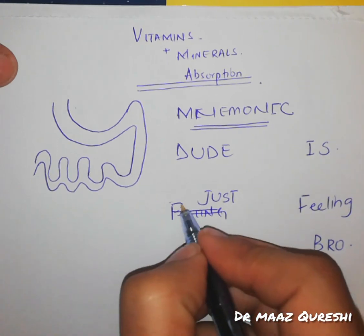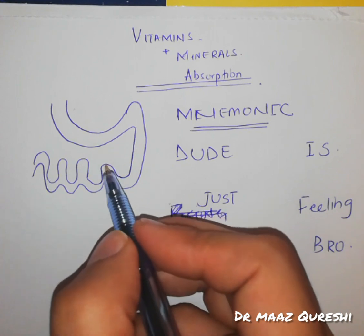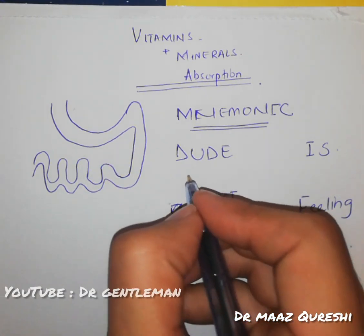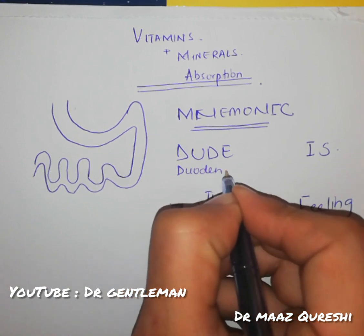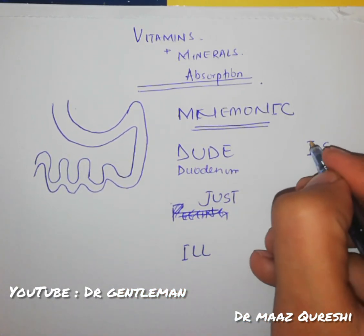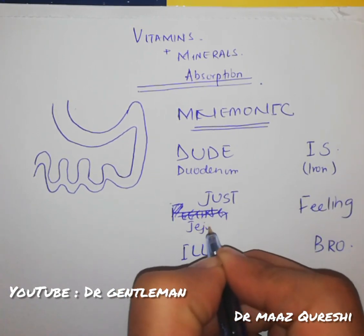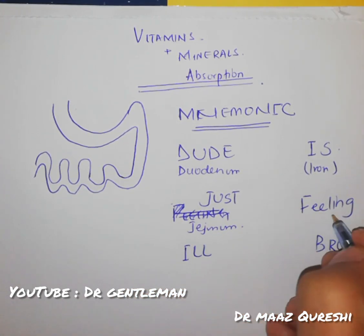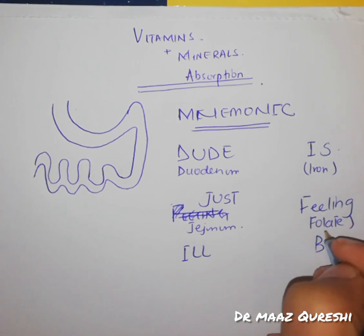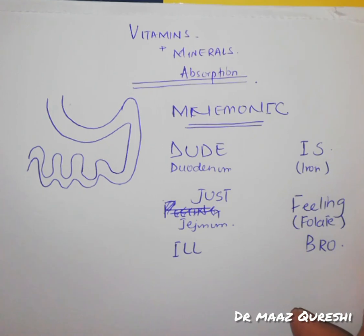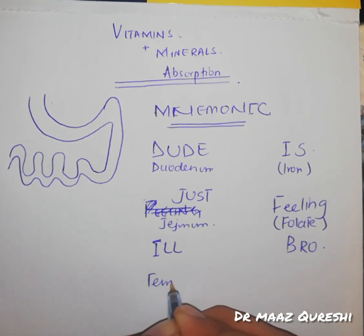On the left side, I'll mention all the parts. D is for duodenum — what is absorbed in the duodenum? Iron. J is for jejunum — and F is for folate, which is absorbed in the jejunum.